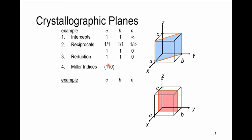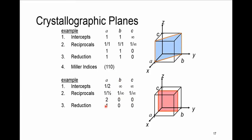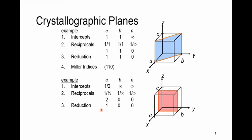Now look at the red plane in the cubic unit cell. It intersects X at 1/2, and is parallel to both Y and Z (infinity, infinity). Reciprocals give 2, 0, 0. Dividing by 2 reduces this to 1, 0, 0. Enclosed in parentheses, the Miller indices are (1 0 0).